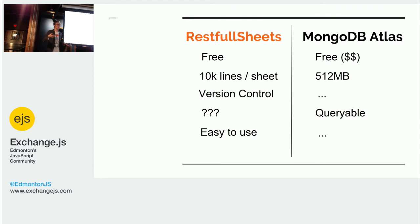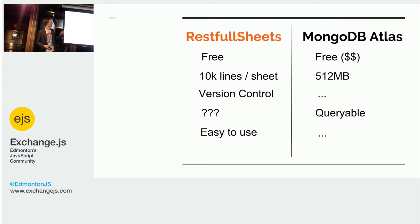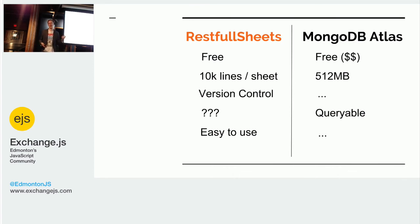RESTful Sheets is free. MongoDB Atlas is what I compared this against — you could just as easily compare it against Firebase. The free tier is what I've decided to compare against, because this is all about lean development. They're both free, except MongoDB Atlas — if you go over, you start to pay money. Most first goes at an app or a website, you probably won't go into that. Spreadsheets allow 10,000 lines before they lock you out. MongoDB Atlas is 512 megabytes — that's definitely more.